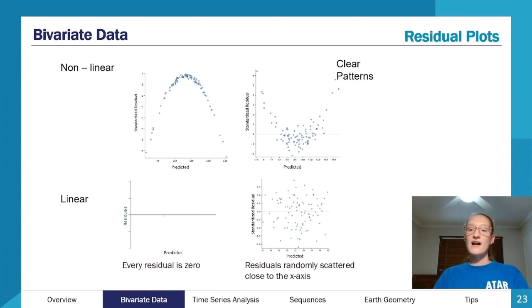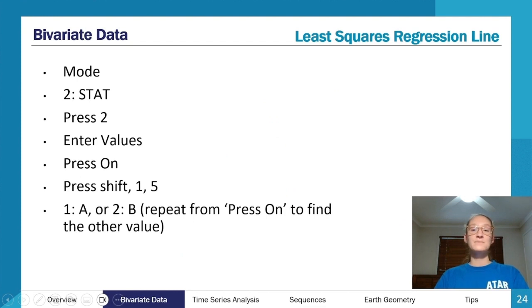When interpreting residual plots, non-random means non-linear, and randomly scattered around means yes, it is linear. That's just a little clarification on residual plots. And again, least squares regression lines, you can also calculate the a and b values using your calculator. It's almost the exact same process as doing it with your r value. I've got the steps up on the screen here.